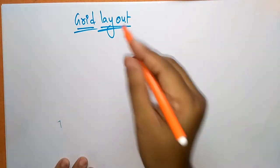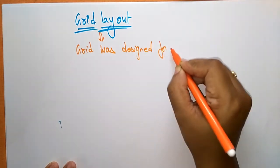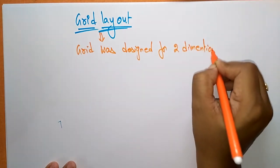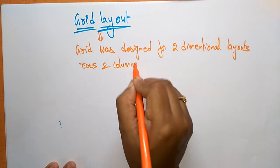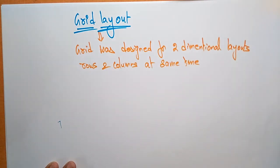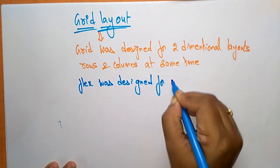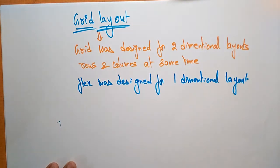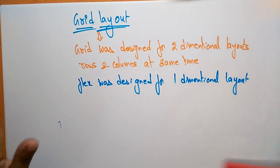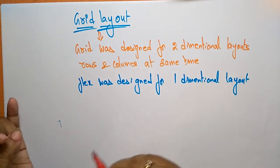Grid was designed for two-dimensional layouts — that is rows and columns at the same time — whereas flex was designed for one-dimensional layout, either row or column. That is the main difference between grid and flex. In the CSS grid layout, the module offers a grid-based layout system with rows and columns, making it easier to design web pages without having to use floats and positioning.